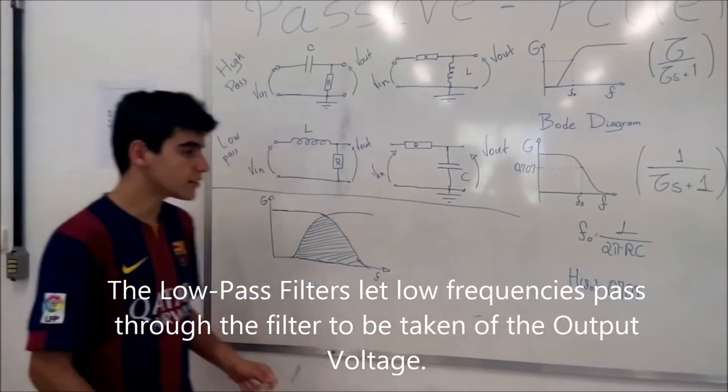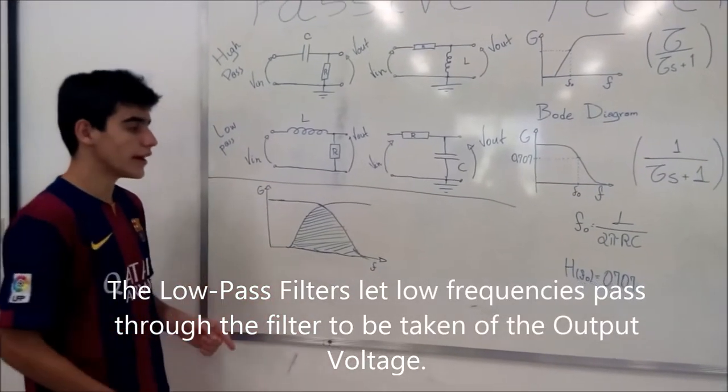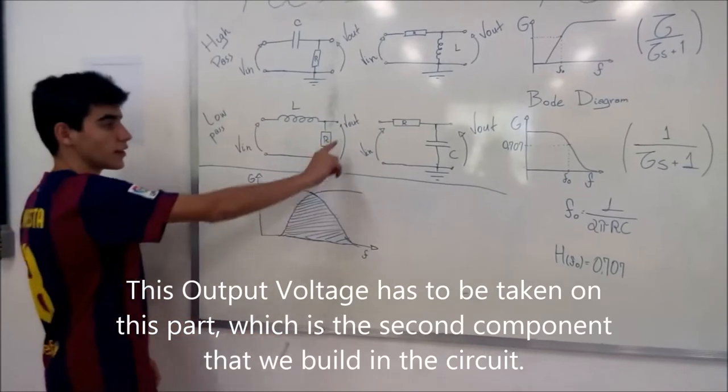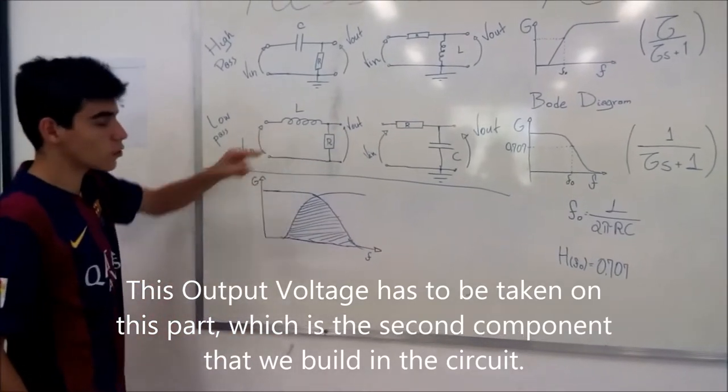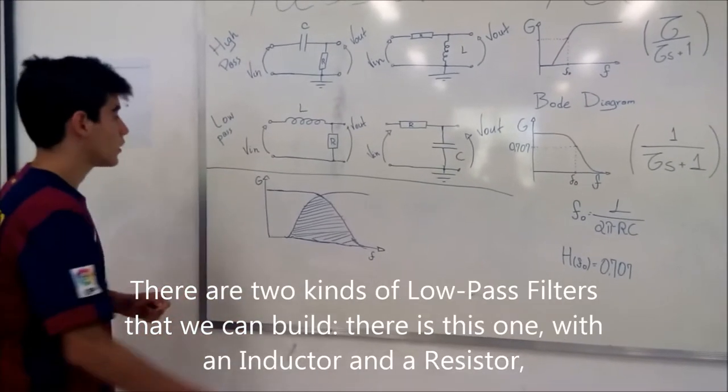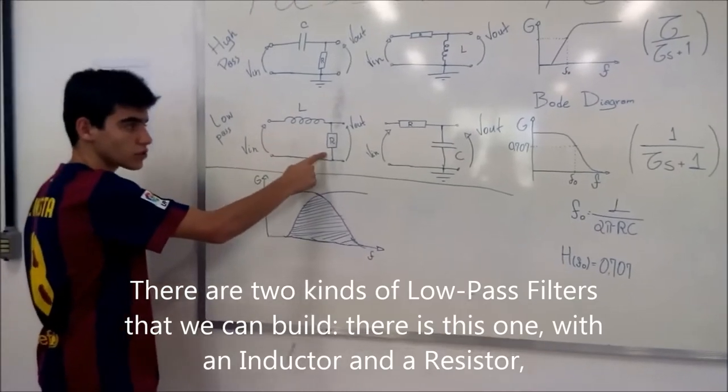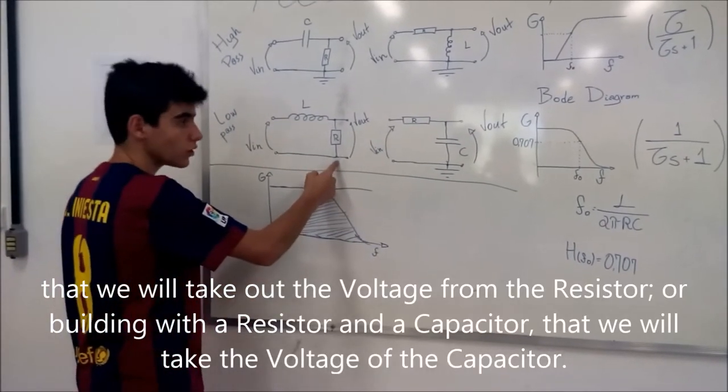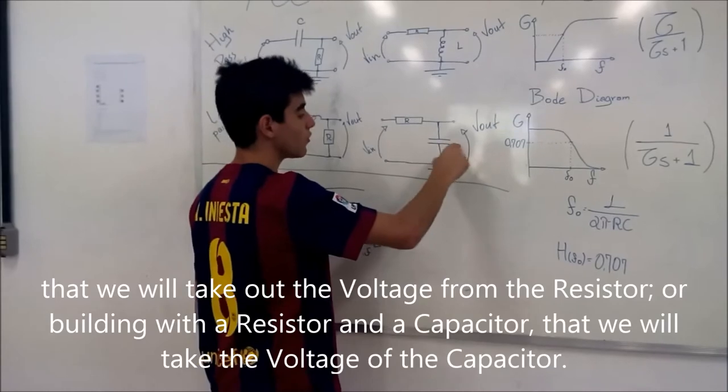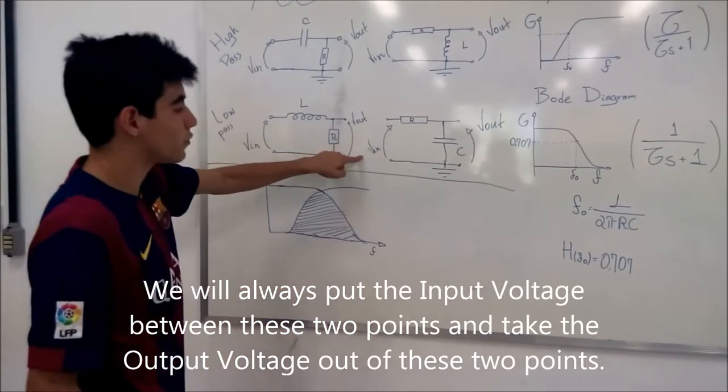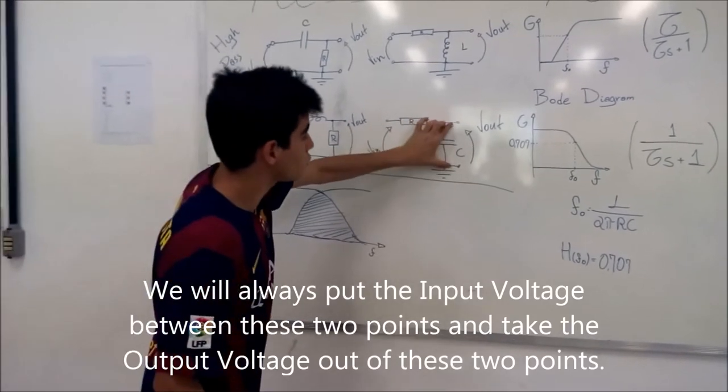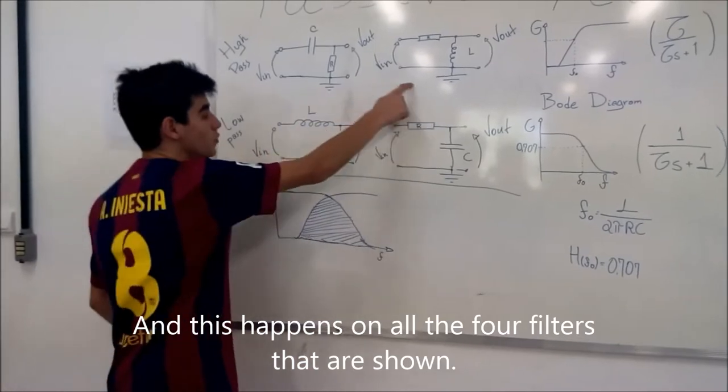The low-pass filter lets low frequencies pass through the filter and to be taken off the output voltage. This output voltage has to be taken on this part, which is the second component that we built in the circuit. There are two kinds of low-pass filter that we can build. There is this one with an inductor and a resistor that will take out the voltage from the resistor, or one built with a resistor and a capacitor that will take the voltage of the capacitor. We will always put an input voltage between these two points and take the output voltage out of these two points. And this happens on all the four filters that I showed before.